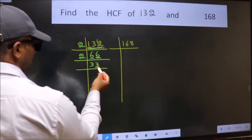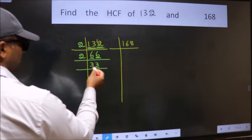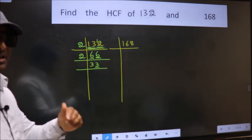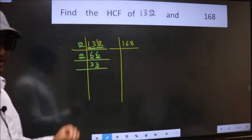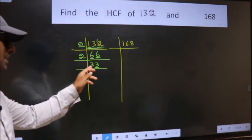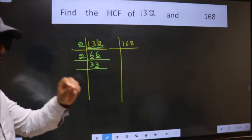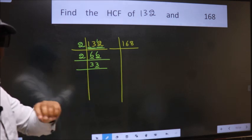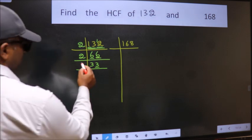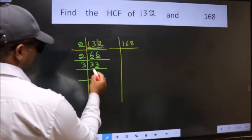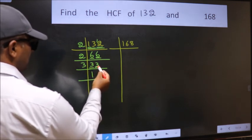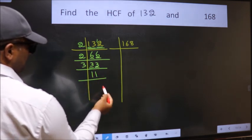Last digit 3, not even, so this number is not divisible by 2. Next prime number 3. To check divisibility by 3, we should add the digits. 3 plus 3, we get 6 and 6 is divisible by 3, so this number is also divisible by 3. So take 3. First number 3, when do we get 3 in 3 table? 3 ones is 3. The other number 3, when do we get 3 in 3 table? 3 ones is 3.